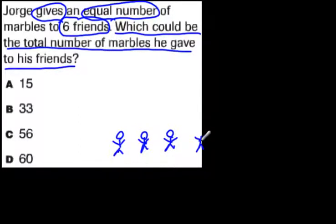I've got 6 friends here. They're each going to get marbles. But how many did he start with, that total number? If he's going to give to 6 friends, that means when he shares equally, 1, 2, 3, 4, 5, 6, another 6 would be 12. This number is going to have to be a multiple of 6.